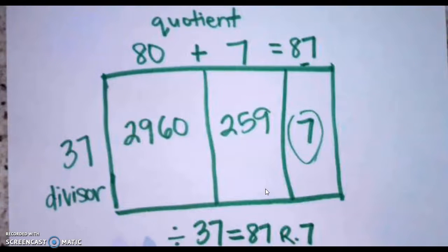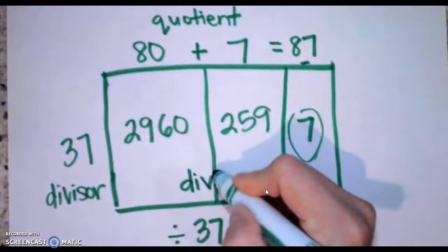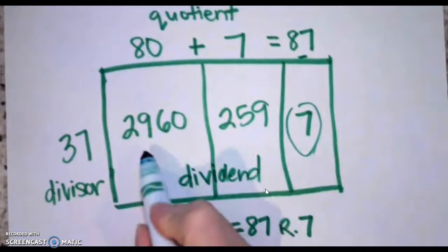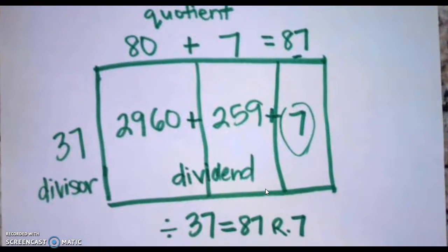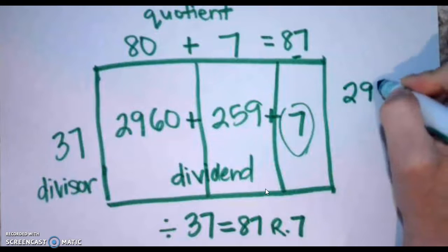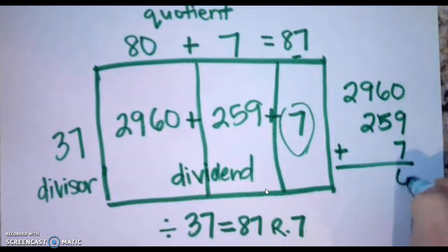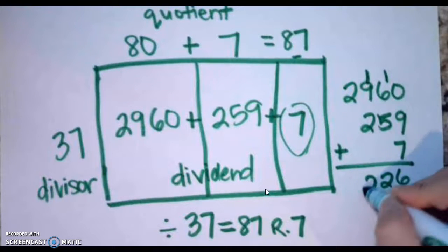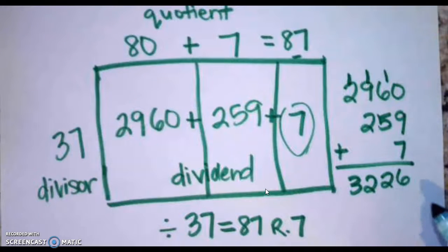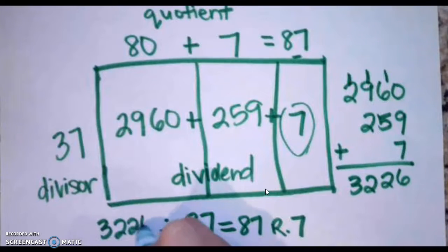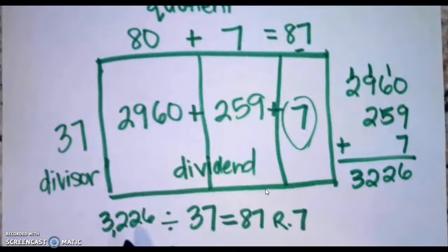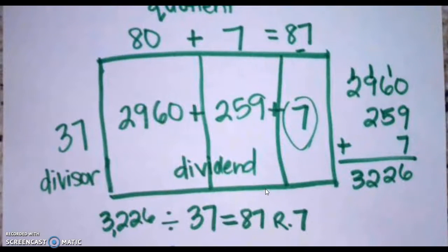The last thing I need is my dividend — that's what goes inside. To find the dividend, I add up all of the pieces inside my area model: 2,960 plus 259 plus 7. Adding these up carefully, my dividend is 3,226. The problem we're solving is 3,226 divided by 37 equals 87 remainder 7. Working an area model forwards and backwards really helps us understand what the division process means and builds those division skills as we move forward.